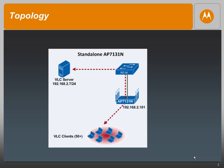Our setup consists of a VLC media server which is software installed on a wired PC. This wired PC connects to a wired gigabit switch. The AP connects to the same switch as well. Multiple wireless clients associate to the AP and can stream video from this VLC server.